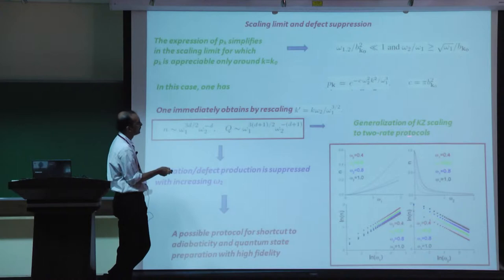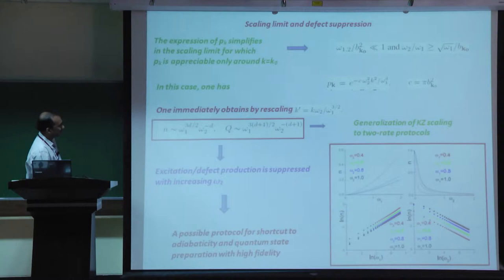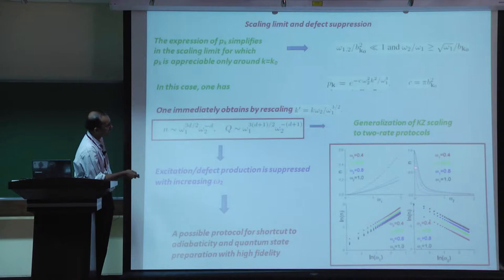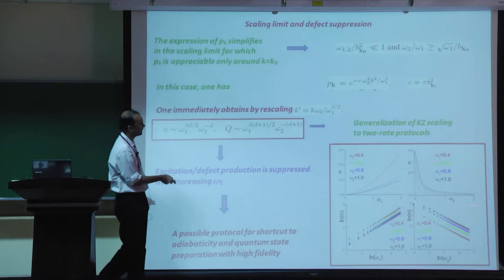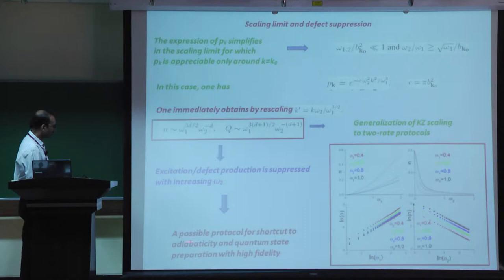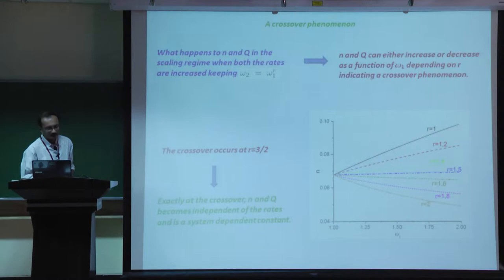This result is a generalization of Kibble-Zurek scaling to two-rate protocols. Not only does this happen in the scaling regime, but plotting n as a function of omega_2 for different omega_1 values shows a generic suppression of excitation density as omega_2 increases. This could act as a possible protocol for shortcut to adiabaticity, and while it is not an optimal protocol, it is probably more easily experimentally implementable.